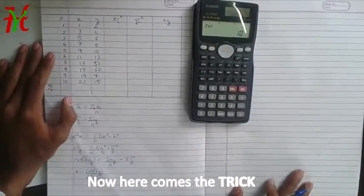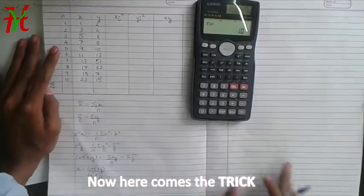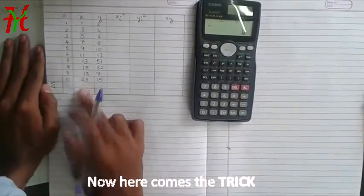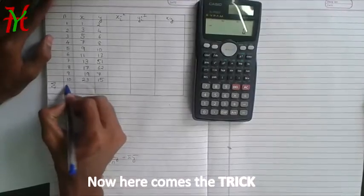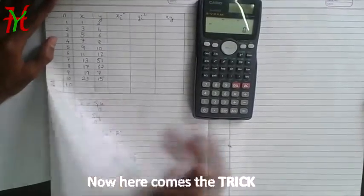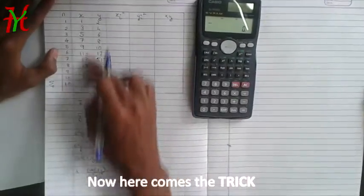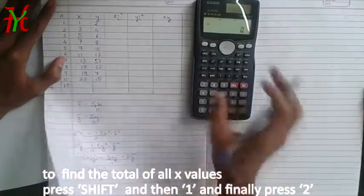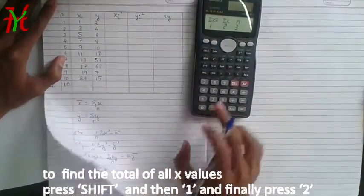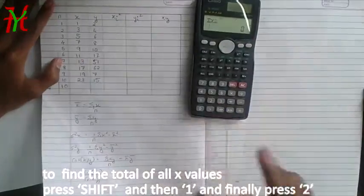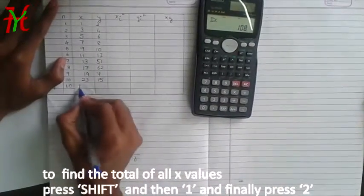Now here's a trick how you can save a lot of time in your exams. Now to get the value, you can see summation of the total numbers is 10 and then summation of X. I don't need to put everything 1 plus 3 plus 5 plus 2. There's a shortcut, just shift 1 and then summation X, 2. Here you get it 108.